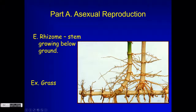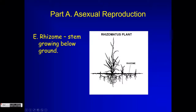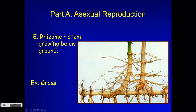The last example is rhizomes. Rhizomes are like runners or tip and stem layering except the stems grow under the ground and then periodically surface above the ground as a whole new plant. Grass is an example — you may have noticed this if you've ever tried to pull grass from a garden: when you lift it up you'll see it's connected through rhizomes to the next patch of grass, making it a little harder to pull out.